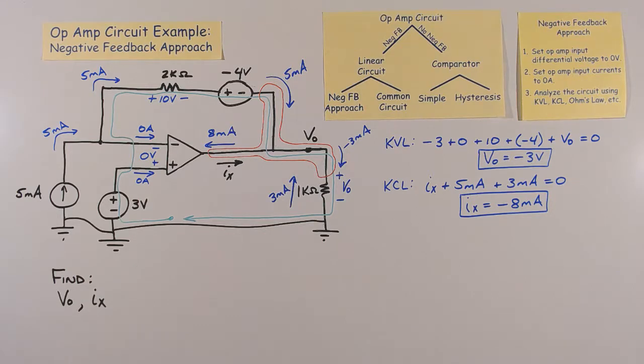Sometimes people ask, if the current is 0 into both op-amp inputs, then how is 8 milliamps flowing into the output? It seems that this is a violation of Kirchhoff's current law.